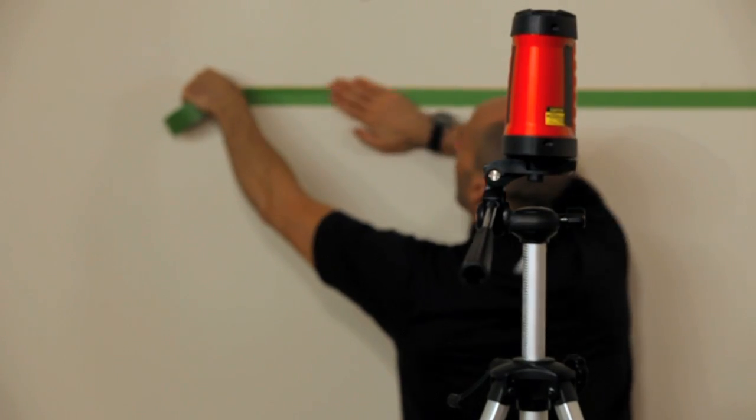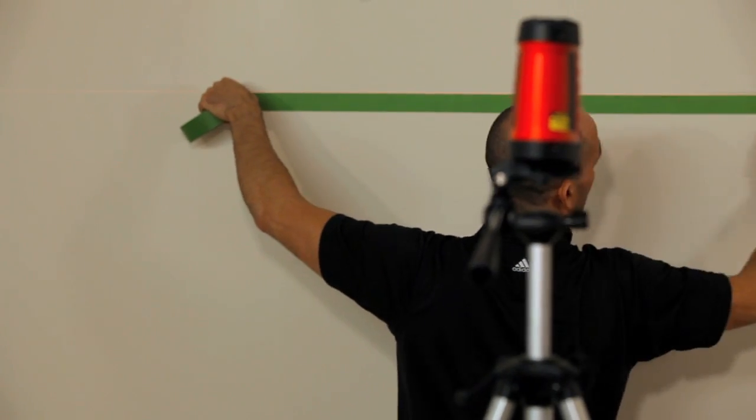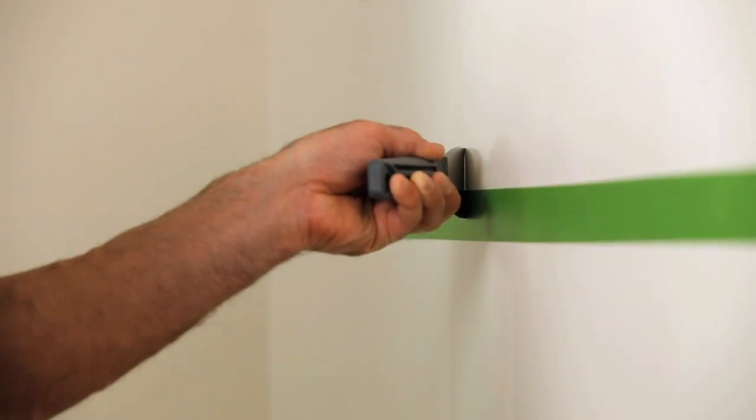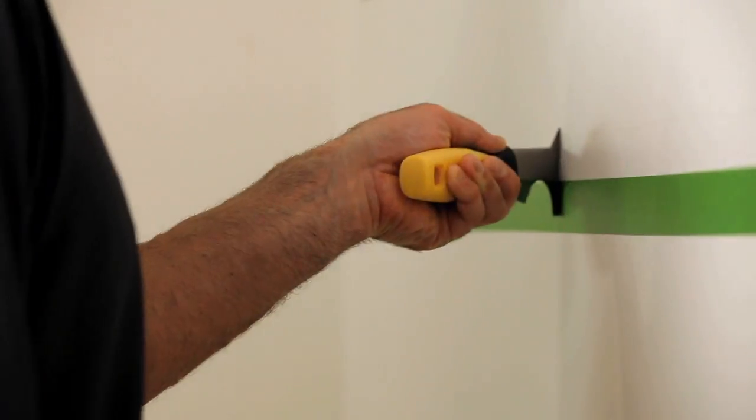Step three, lay your FrogTape following the line you've marked with your laser level or carpenter's level. Make sure to burnish the edge of the tape with your fingers, putty knife, or a five-in-one tool.